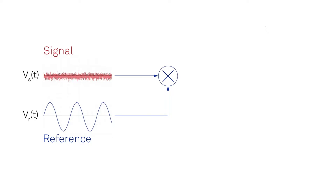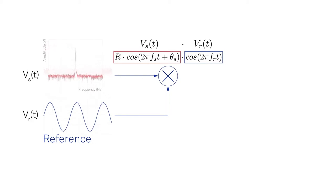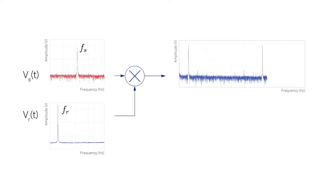The signal mixing is equivalent to multiplication of the two inputs and best understood in the frequency domain. When the signal and the reference are sine waves at frequencies Fs and Fr, this operation results simply in the two components at the sum and at the difference of the two.